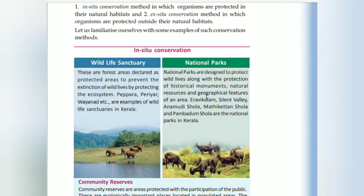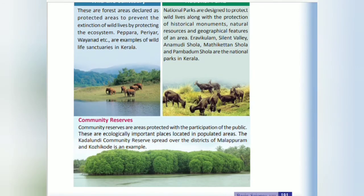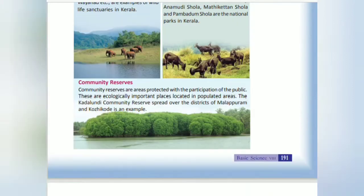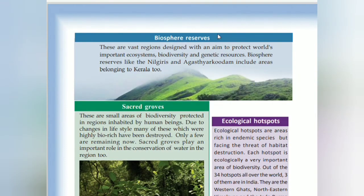In-situ conservation involves the protection of historical monuments, natural resources and geographical features of an area. Anamudi, Madhigatana and Pambadana are national parks in Kerala. Community reserves are areas protected with the participation of the public. Biosphere reserves are vast regions designed to protect the world's important ecosystems; the ecosystem, biodiversity and genetic resources are protected within biosphere reserves.